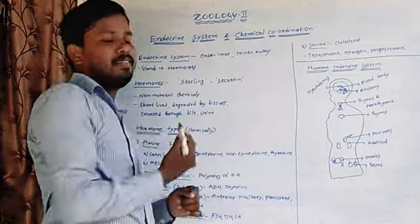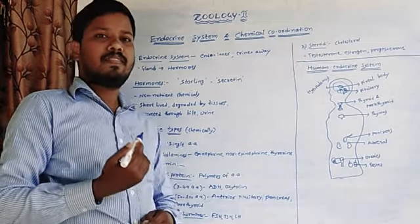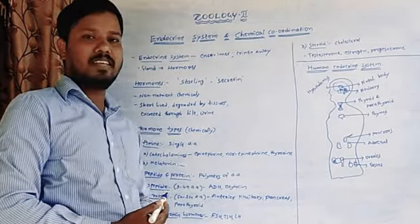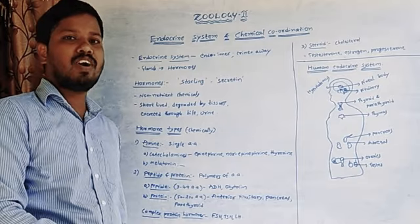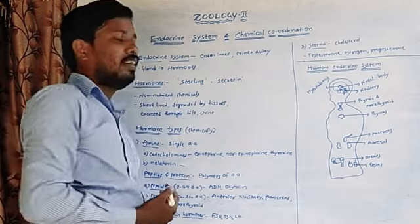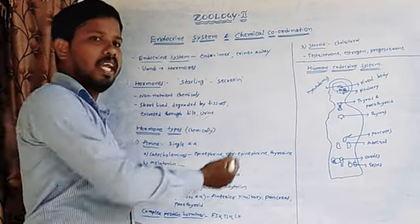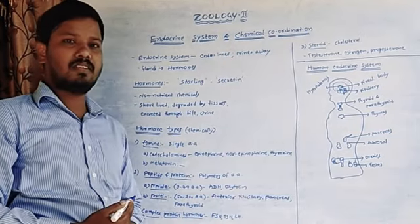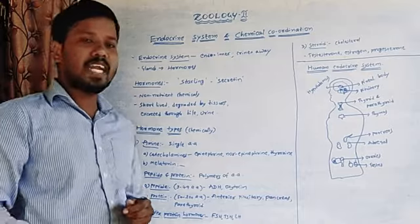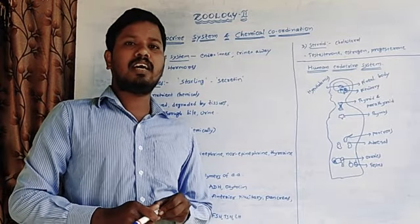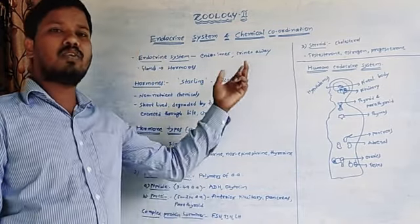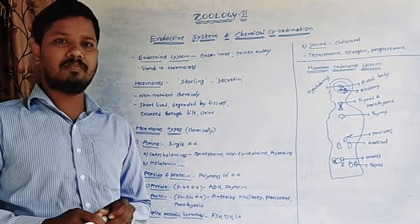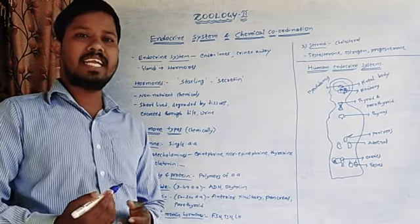The word endocrine is derived from the Greek words 'endo' meaning within and 'krinein' meaning to secrete. In the endocrine system, glands are involved in coordination and regulation which secrete hormones.